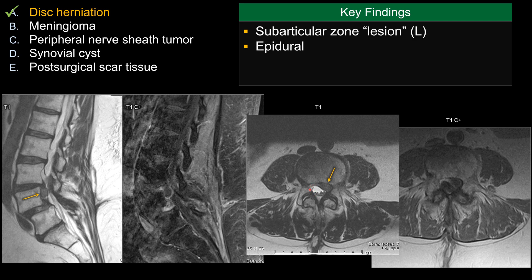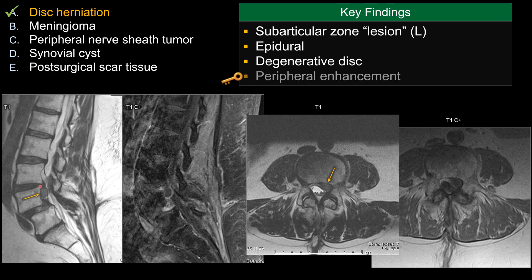The nerve root is widely open in the lateral recess on the right side. On the left side, the nerve root has been compressed. Also, there's a degenerative disc one level above at L3-4. The disc is dehydrated or desiccated. The most important feature is the way the lesion enhances. The enhancement pattern is peripheral rim enhancement on the sagittal view and also on the post-contrast axial view.